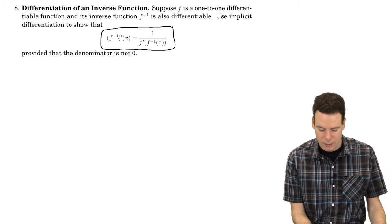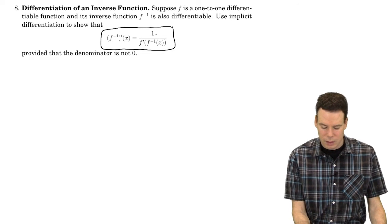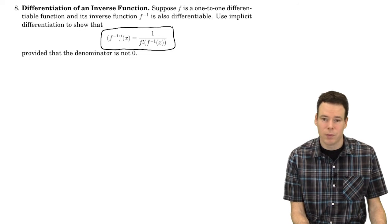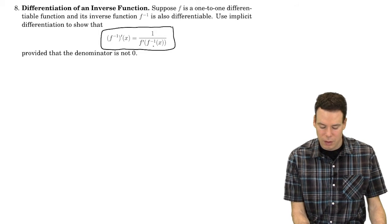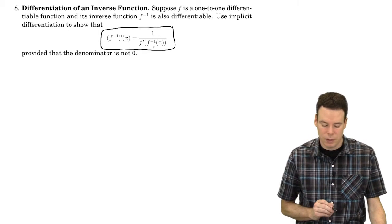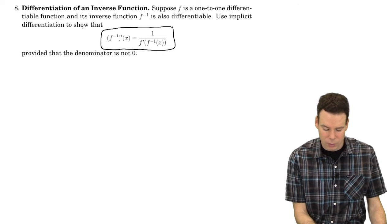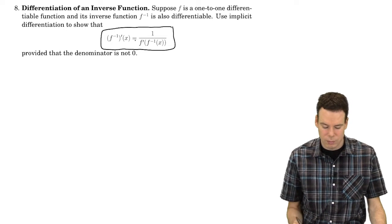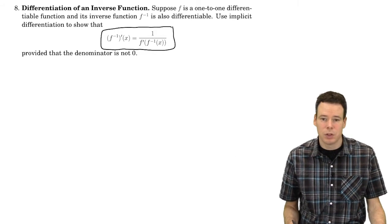The key result is: if I want to differentiate the inverse function at x, I just need to take one over the derivative of the original function evaluated at f inverse of x. Before we prove this using implicit differentiation, let's see why this should be the case.